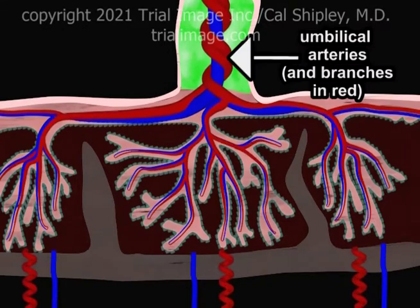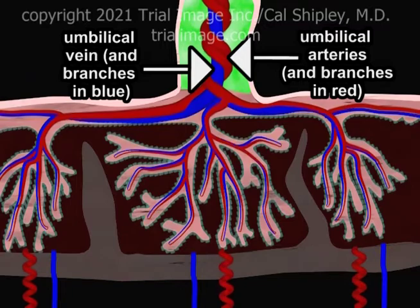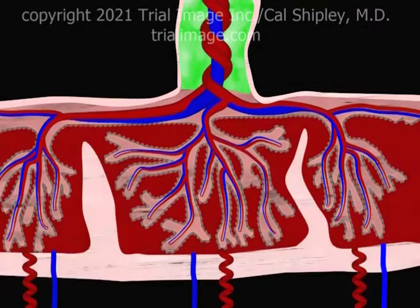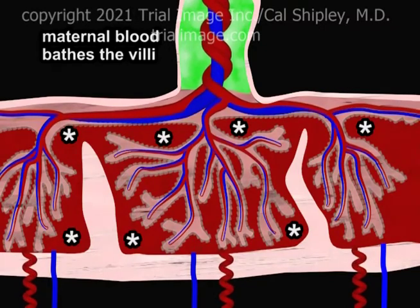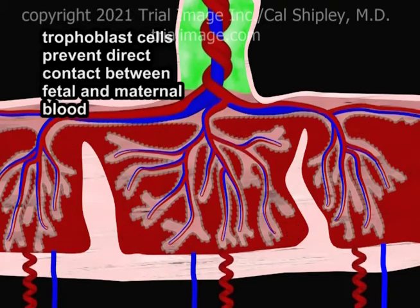The fetal blood vessels contained within the villi are branching structures of the umbilical arteries and the umbilical vein. The villi are bathed in maternal blood, but the trophoblast cell layer prevents any direct physical contact between the fetal and maternal blood streams.